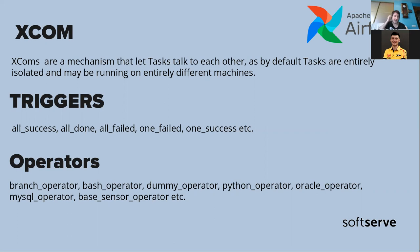What about operators? Airflow has a lot of different operators which help you create your workflow more flexibly. An operator is an entity on the basis of which task instances are created; it describes what will happen during the execution of a task instance. For example, if you use the BashOperator, this operator helps you run some bash script. The PythonOperator helps you run Python scripts, the OracleOperator helps you work with an Oracle database — there are a lot of different operators, and it's very convenient for Airflow.